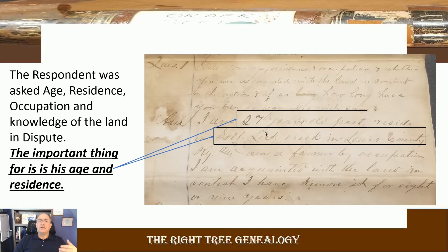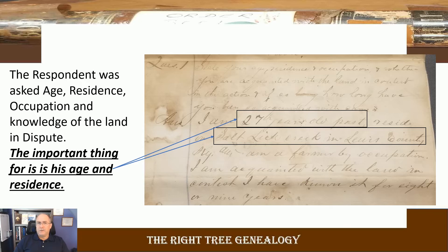A question was posed by the plaintiff's attorney asking about where he lived, his occupation, and his knowledge of the land in question. William Sarton stated he was 27 years old — important because he's not an older man but has been farming for years. He lives on Salt Lick Creek, near the property in question, and stated he had known of this land for eight to nine years, giving him an understanding of what was there before and after Evans obtained the property.